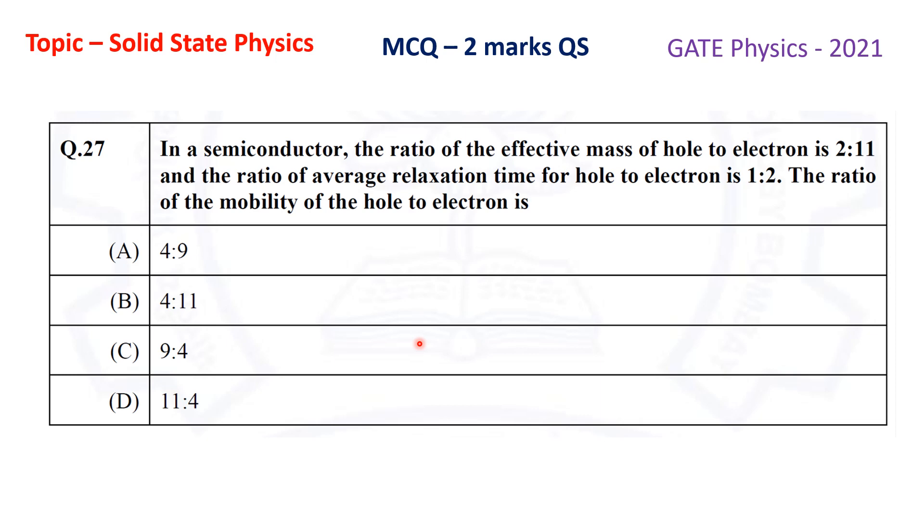To solve this problem, we use the expression for mobility derived from the Drude theory of electron gas model. In a semiconductor, there are two types of charge carriers: holes and electrons. Holes are responsible for conduction in the valence band, and electrons are responsible for conduction in the conduction band. We will apply the mobility formula for both carriers and take the ratio to find the answer.